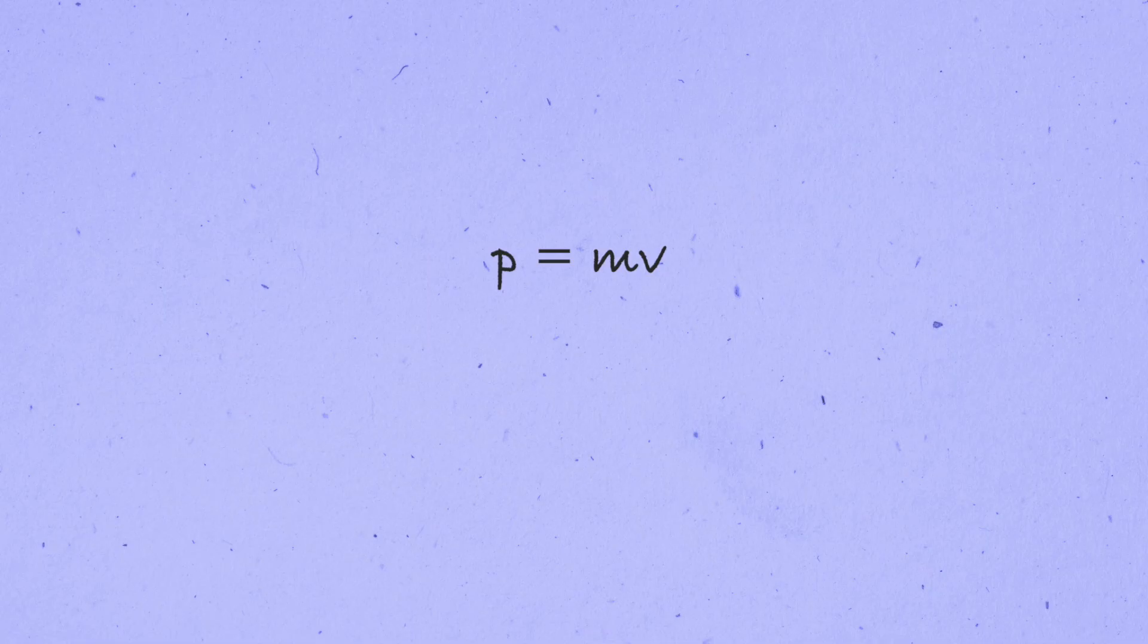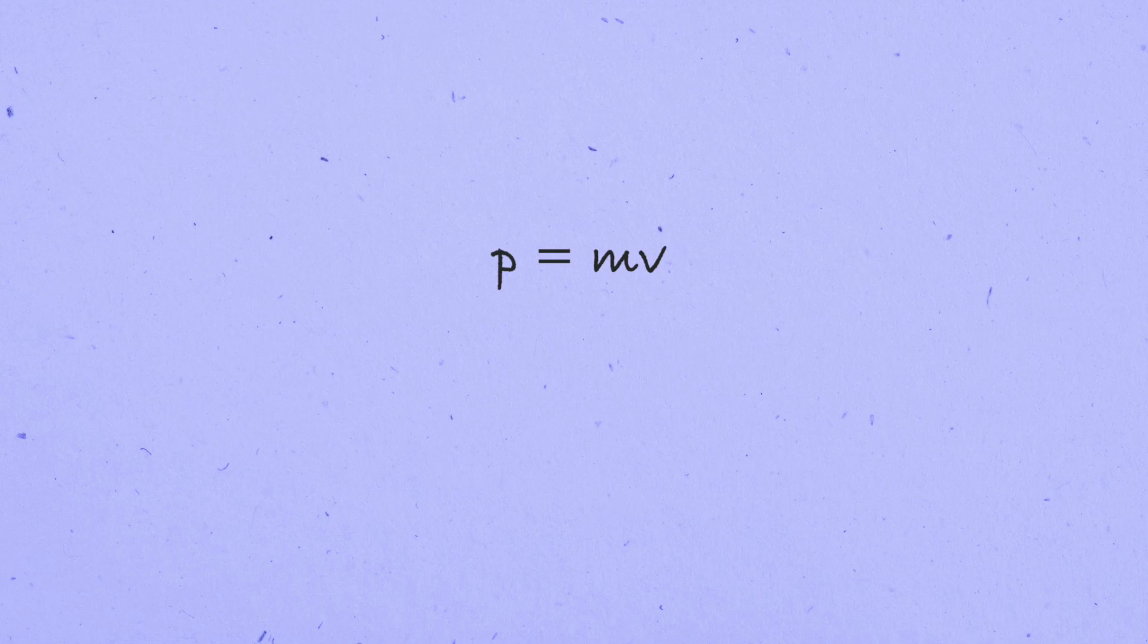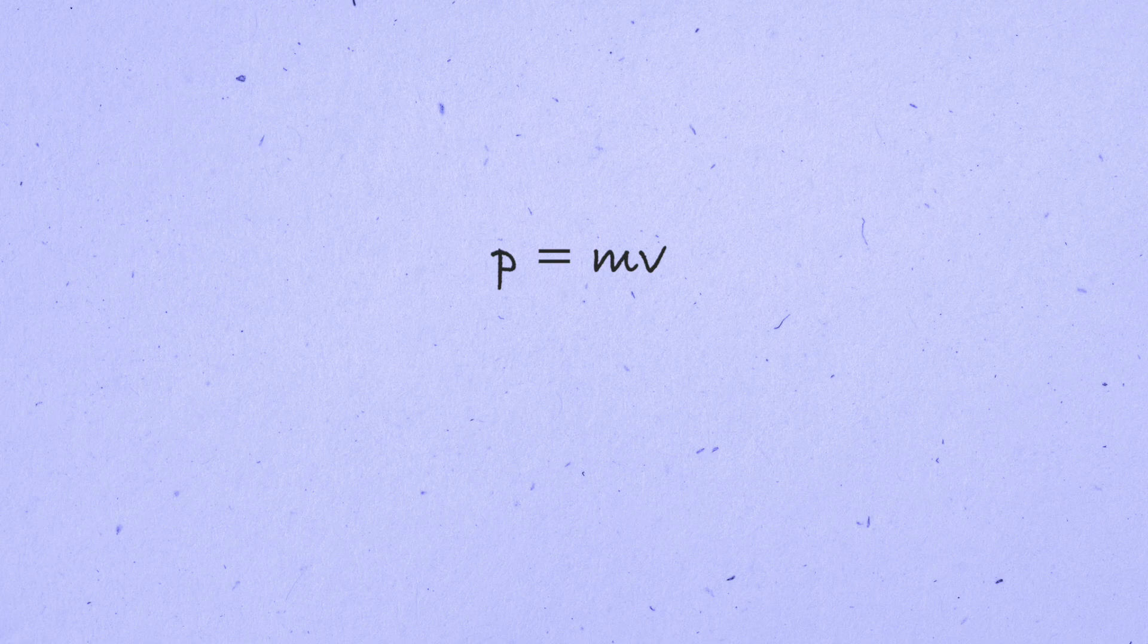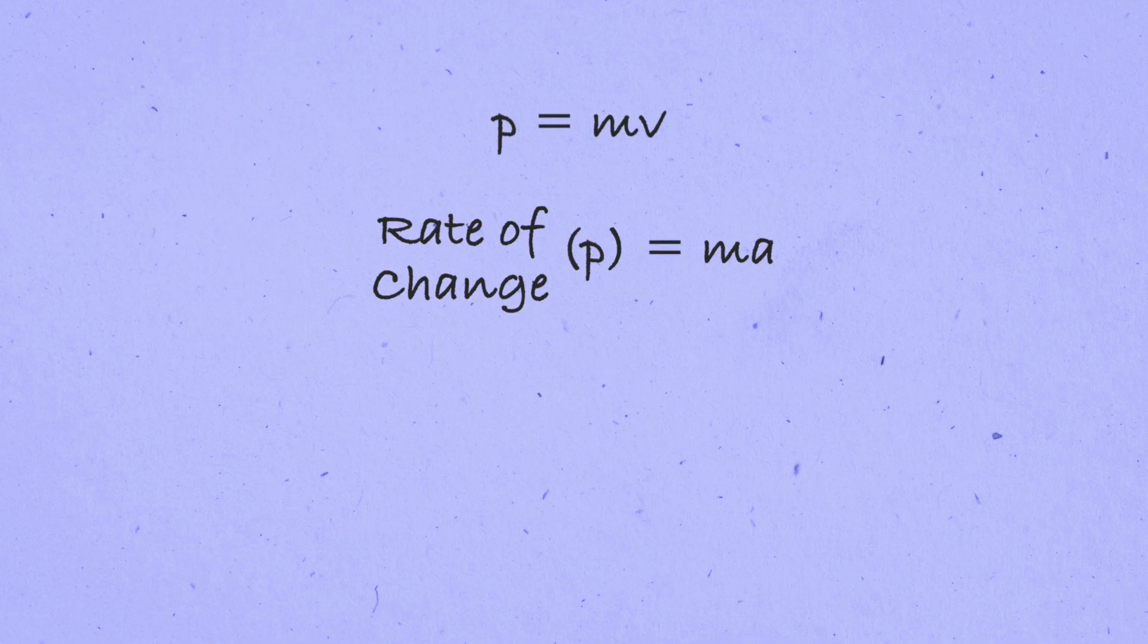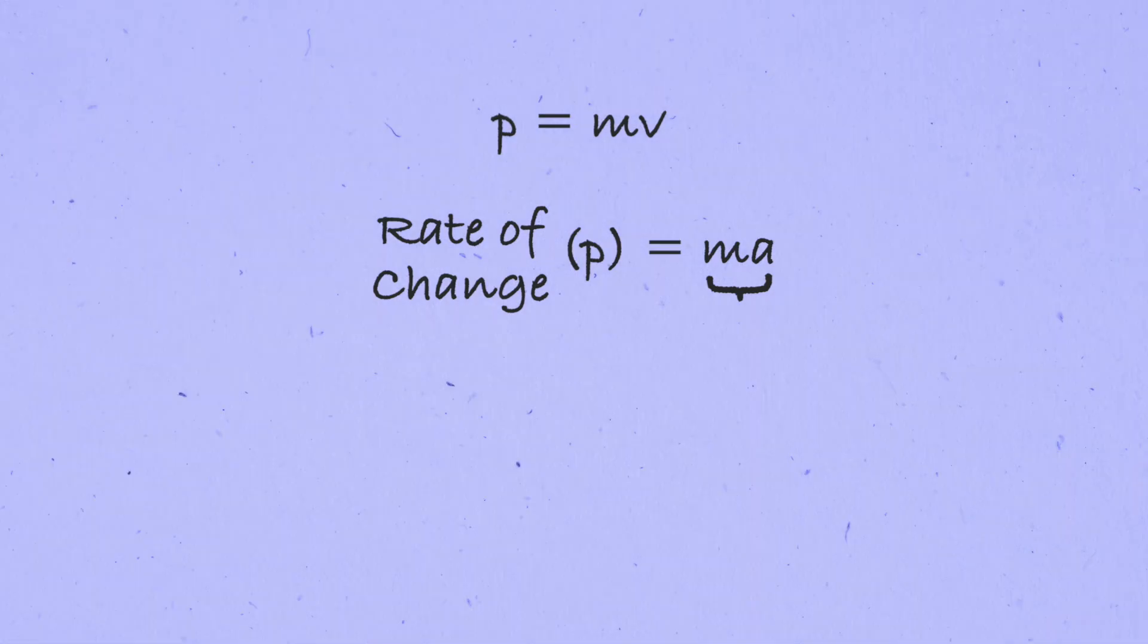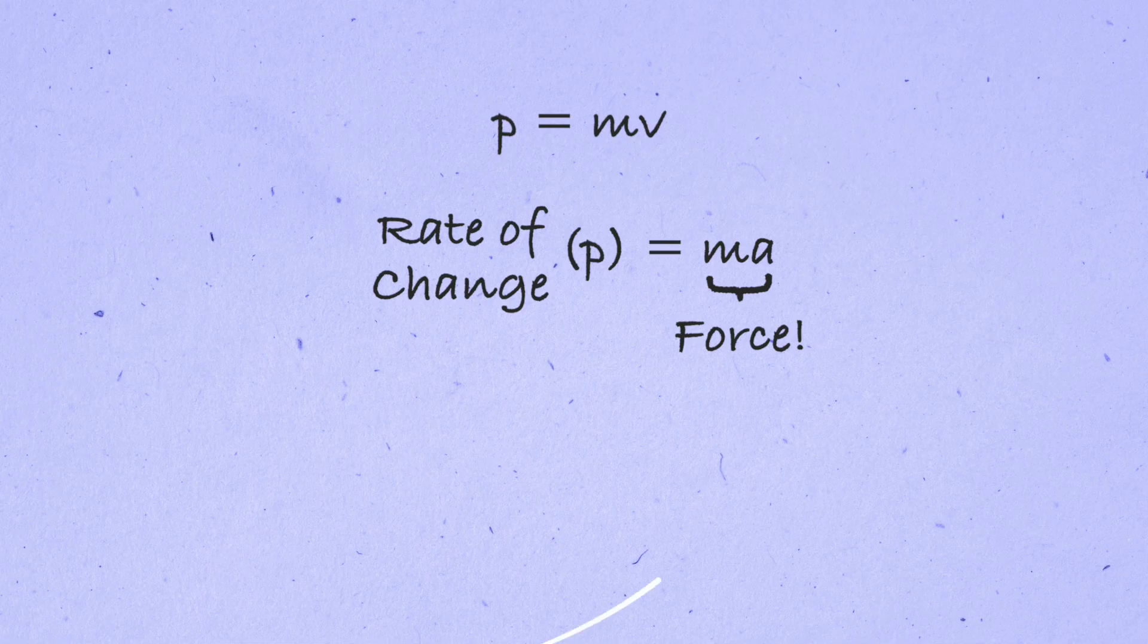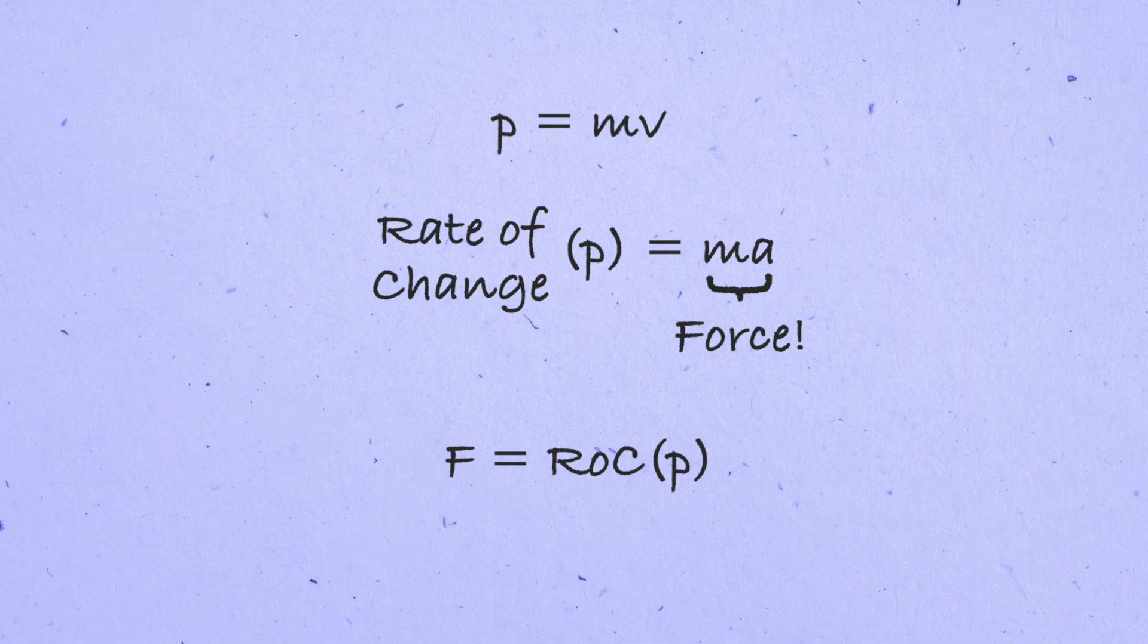That way, we account for the fact that an 18-wheeler traveling down the street at 25 miles per hour should count for a much larger amount of motion than a bicyclist riding down the road at the same speed. Now, notice that if we take the rate of change of the momentum, we get the mass of the particle times its acceleration. But we recognize that from Newton's second law, F equals ma. Therefore, the rate of change of a particle's momentum is equal to the total force that's acting on it.